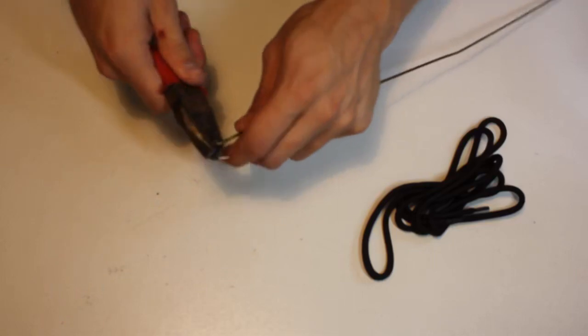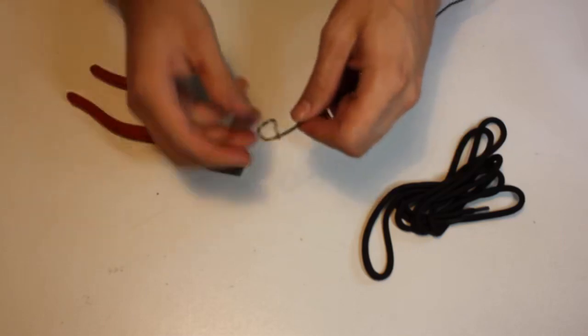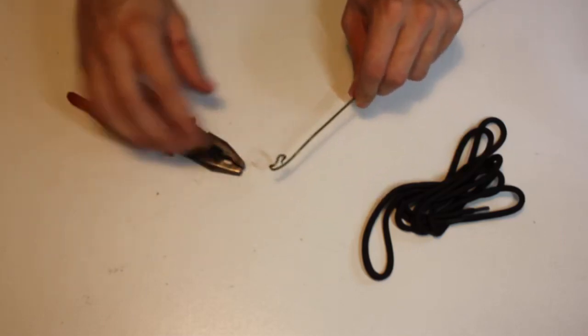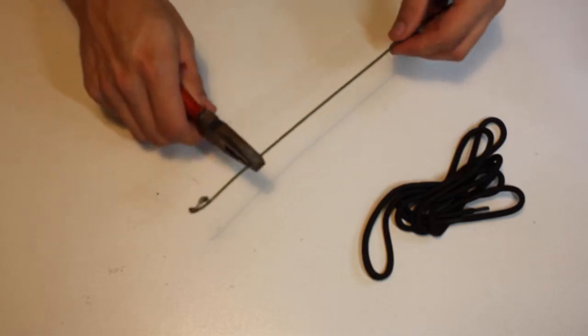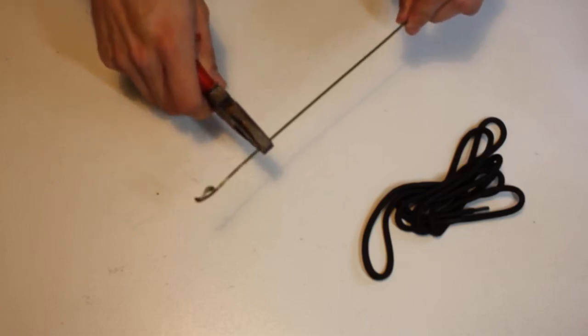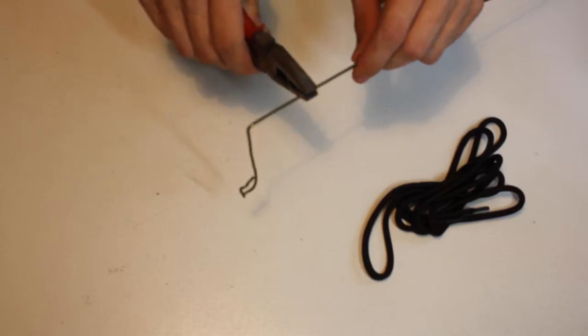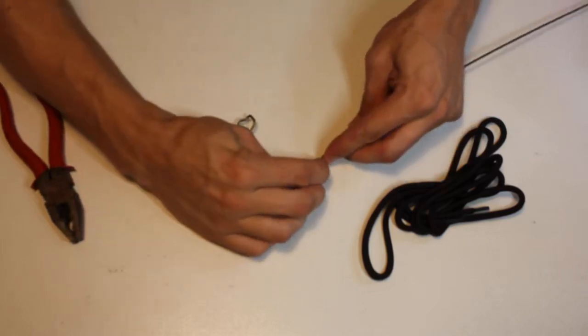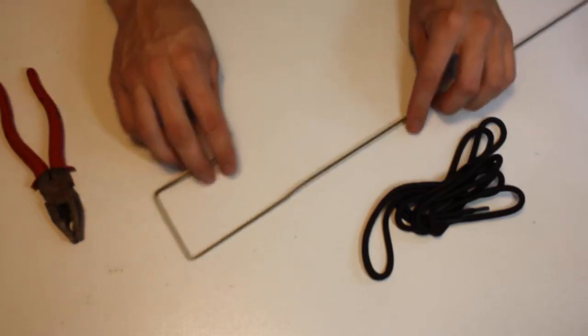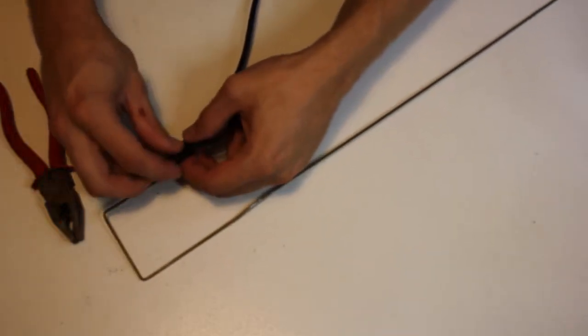So we're going to take our pliers, and we're just twisting that over. And so now we have this little eyelet here. And next what we are going to be doing is we're going to create a bend in it, and we want to create a kind of hook here that will go over the door handle. So this is the shape that we're looking for on this side of it. And at this point we can take our string here, and we will just tie that on.